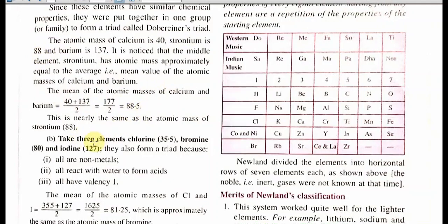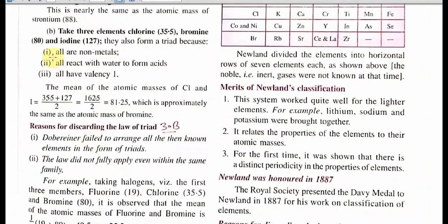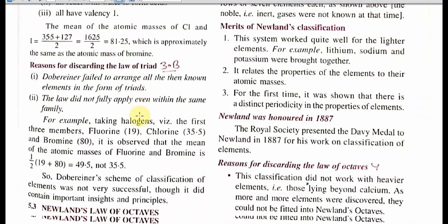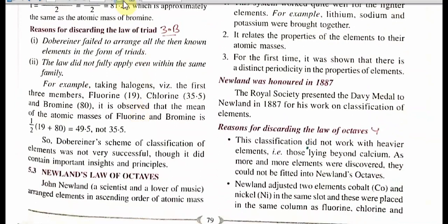Consider a second triad: chlorine, bromine, and iodine. They were also triads because all were non-metals, all form acids, and have a valency of one. Taking the arithmetic mean: (127 + 35.5) / 2 = 81.25, which is very close to 80, the atomic mass of bromine. So these were also triads. But this rule was not very successful because it was applicable to only a very few number of elements.